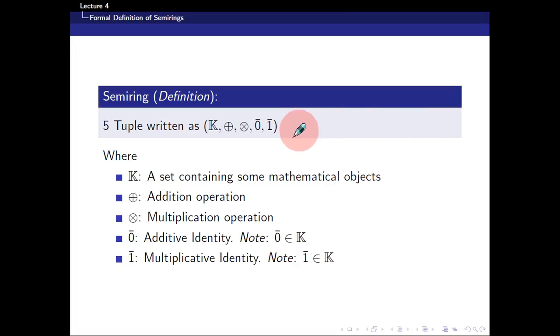A semiring mathematically is written as a five-tuple of a set K, ⊕, ⊗, 0̄, and 1̄. K is a set containing some mathematical objects, or more explicitly, it's a set containing all the weights of your automaton. ⊕ is the addition operation, ⊗ is the multiplication operation, 0̄ is the additive identity, and 1̄ is the multiplicative identity. These four notations are written as such so to not confuse with classical addition, classical multiplication, the real number zero, and the real number one. In actuality, it could be anything.